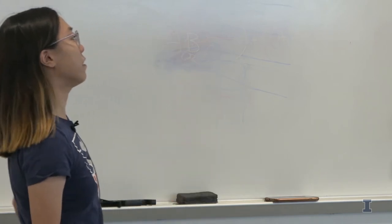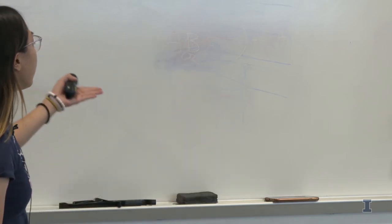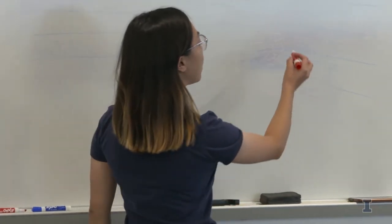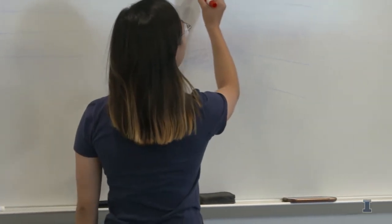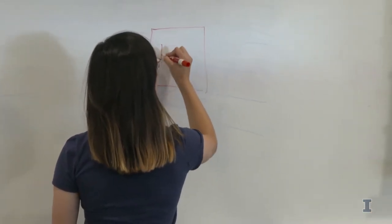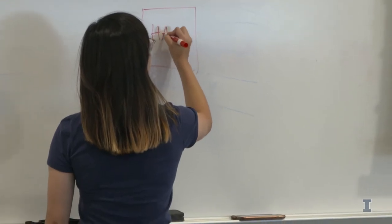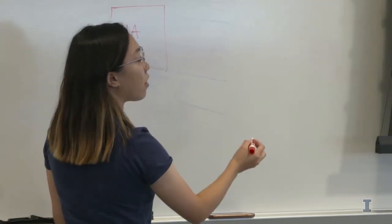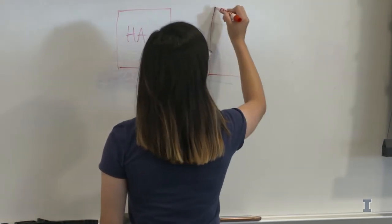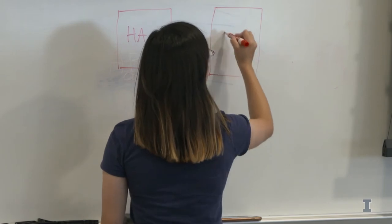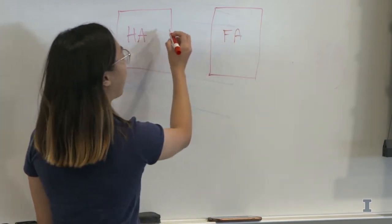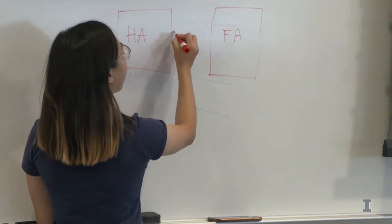Because we have two digits, our ones place is going to have the half adder that we just talked about. And then our twos place is going to have the full adder to take the carry that came from the half adder.